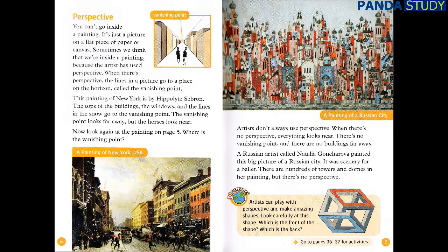Artists don't always use perspective. When there's no perspective, everything looks near — there's no vanishing point and there are no buildings far away. A Russian artist called Natalia Goncharova painted this big picture of a Russian city. It was scenery for a ballet. There are hundreds of towers and domes in her painting, but there's no perspective.